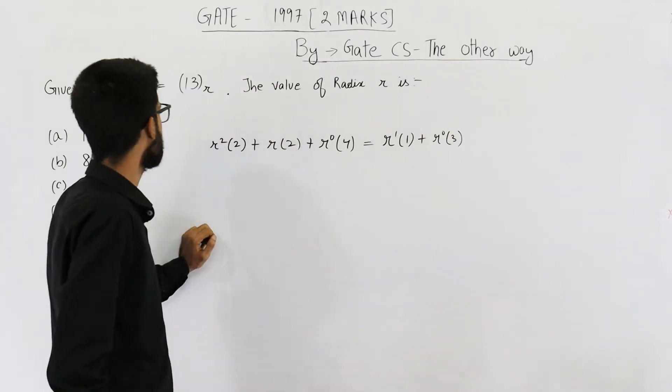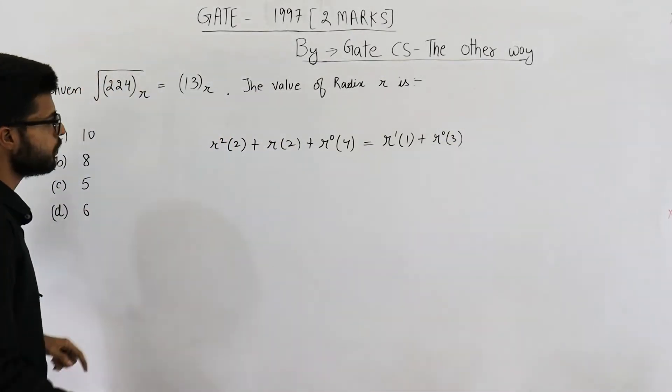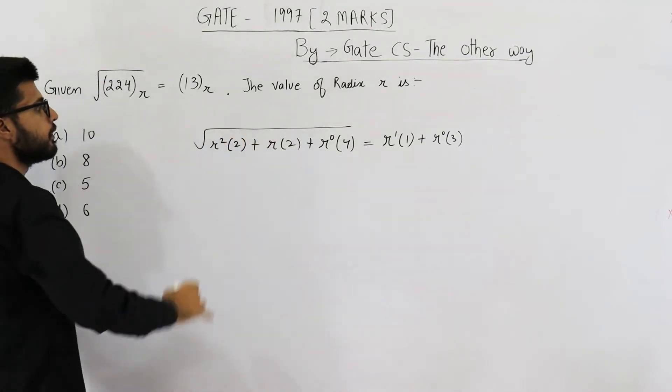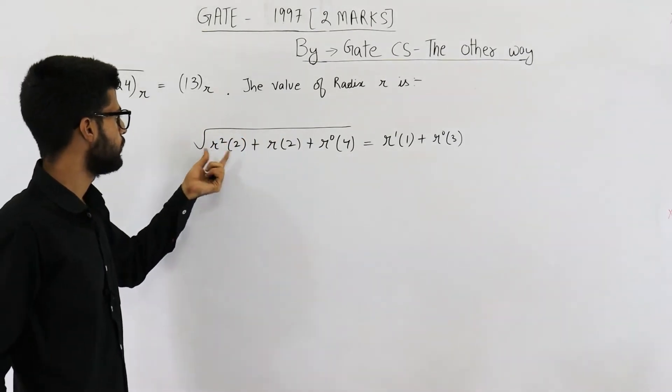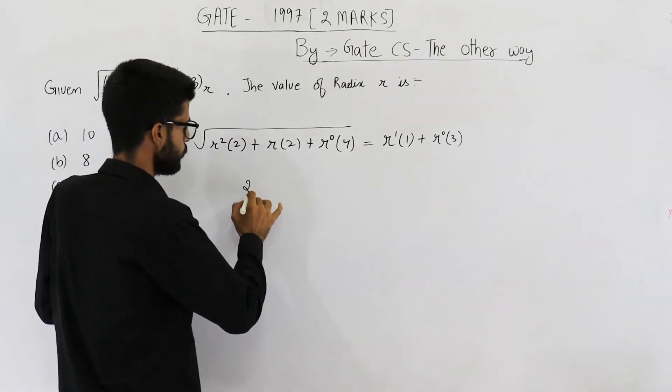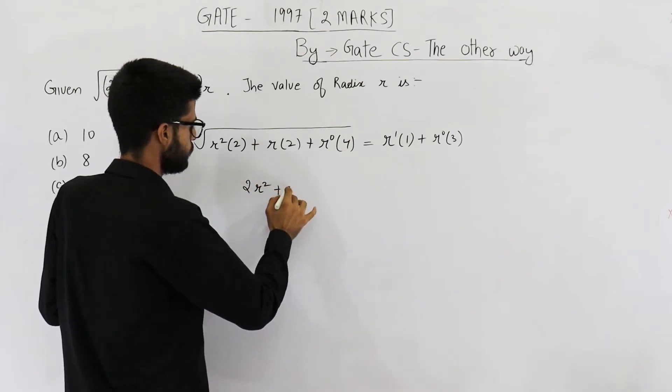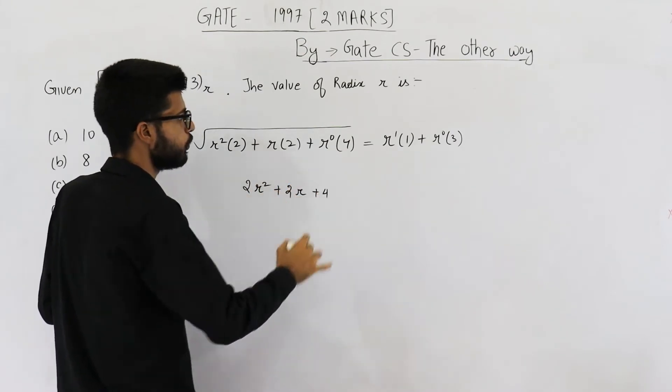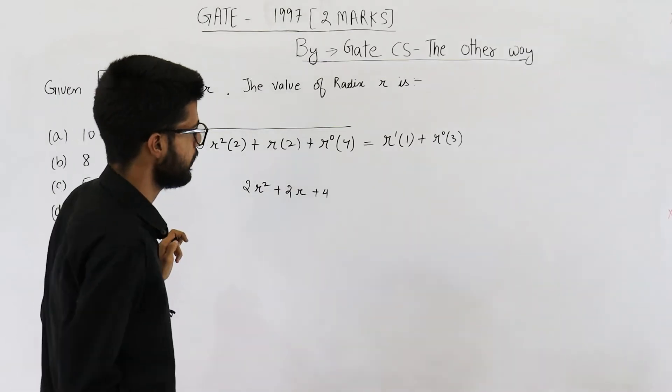Like this, now this square root is left as it is. This will become 2r square plus 2r plus 4, and this one is r plus 3.